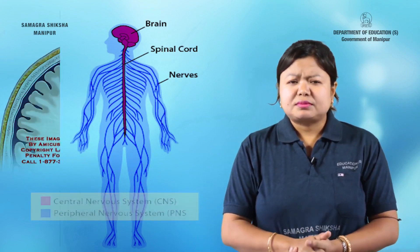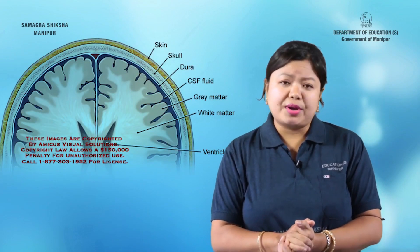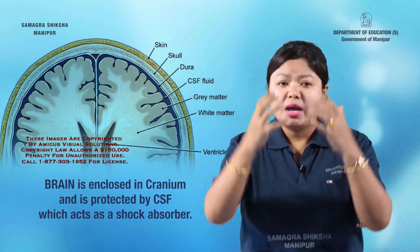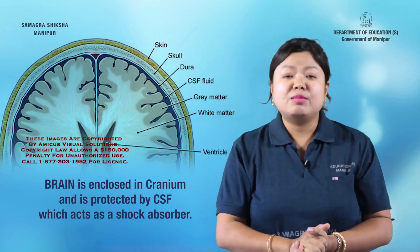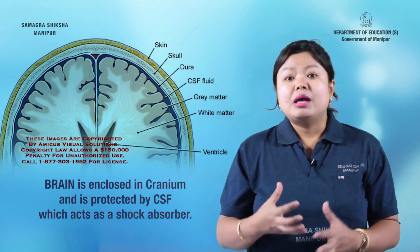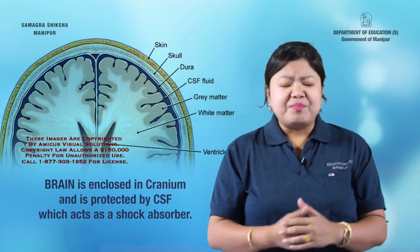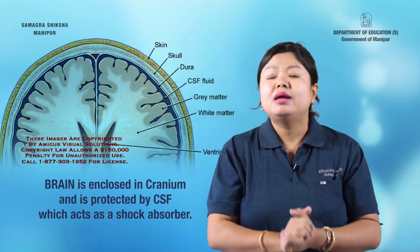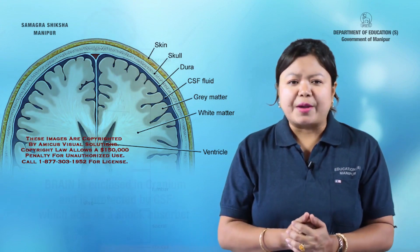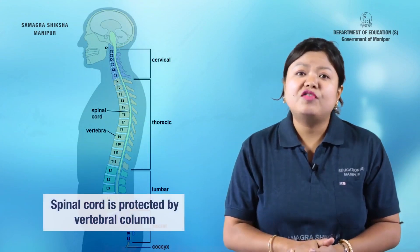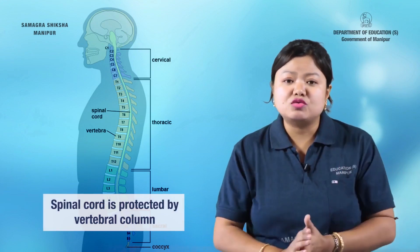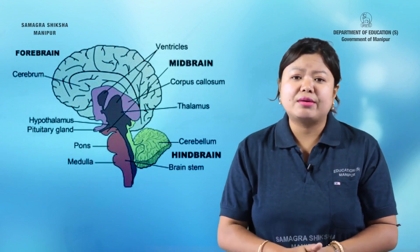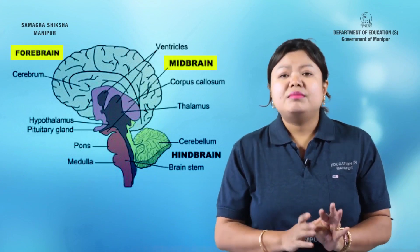The central nervous system consists of the brain and spinal cord. The brain is enclosed in the cranium and is protected by cerebrospinal fluid, which acts as a shock absorber — a gelatinous material. The spinal cord is protected by the vertebral column. The brain has three components: the forebrain, the midbrain, and the hindbrain.